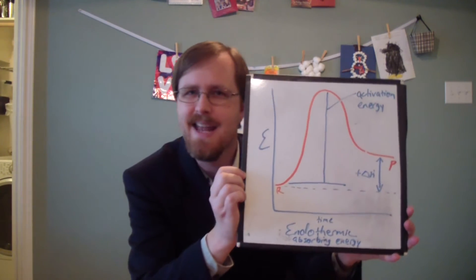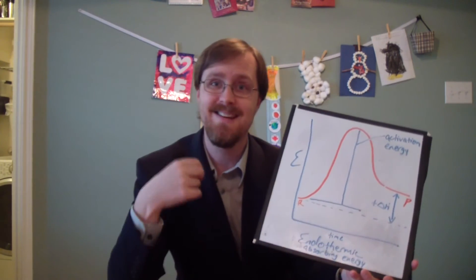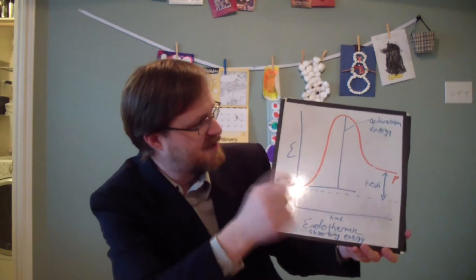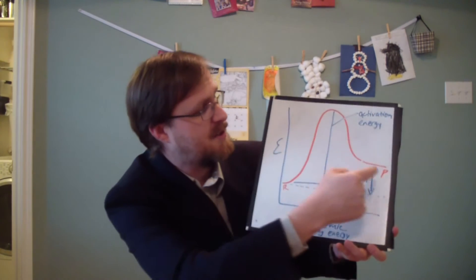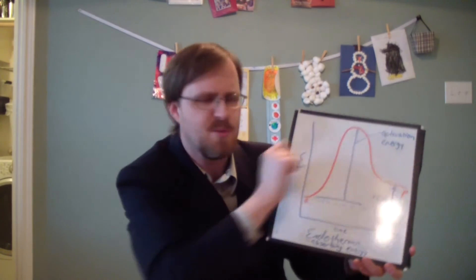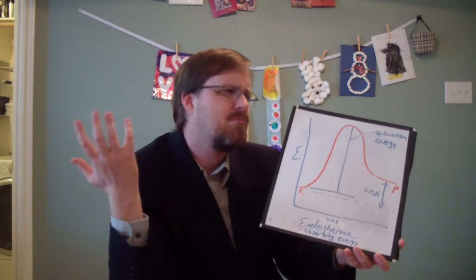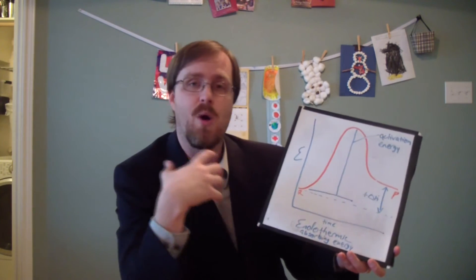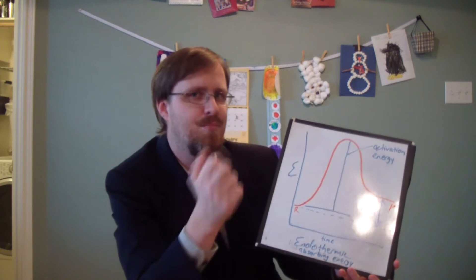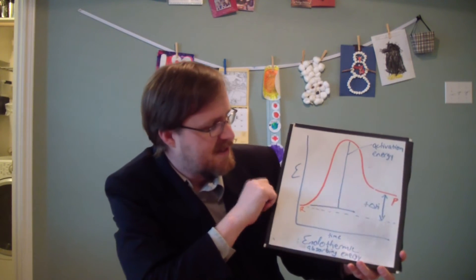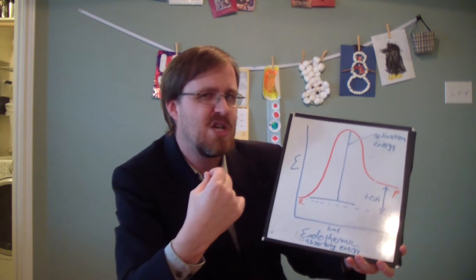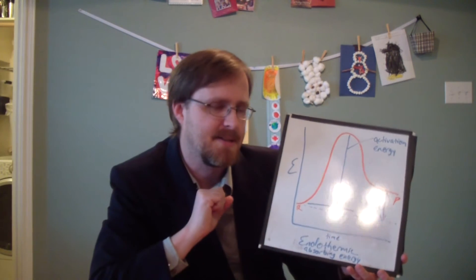Let me show you here. This is an endothermic graph. Endo meaning 'in,' thermic referring to heat or energy — so this is absorbing energy. Over here on the left we have the reactants, and over on the right we have the products. It starts out with a very large hill that has to go up. This is what's known as the activation energy — the energy required to activate or start the reaction. Once that energy has been absorbed, the reaction proceeds. And as you can see, this being an endothermic reaction, the products are clearly higher than the reactants, meaning it has absorbed energy, giving us a positive delta H.